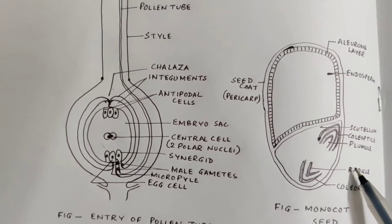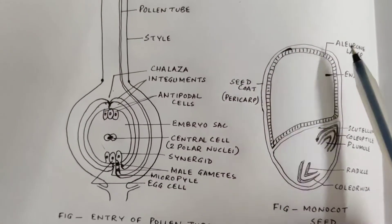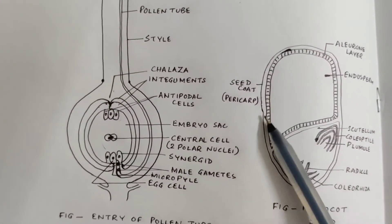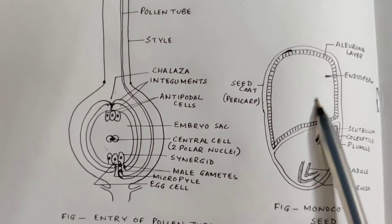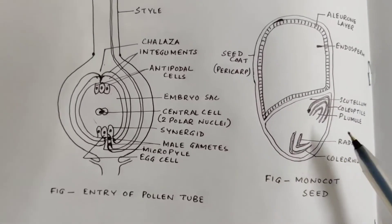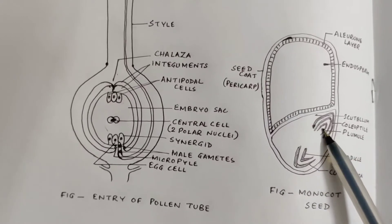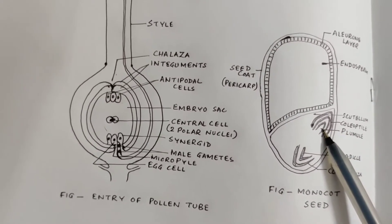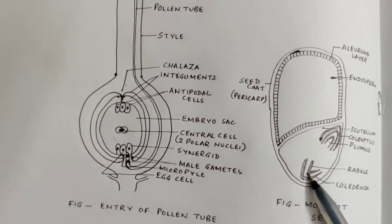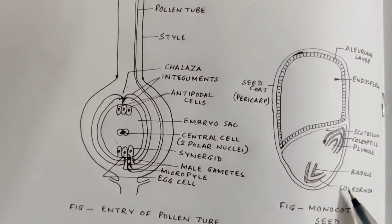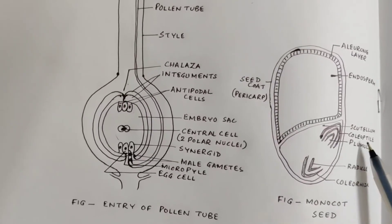Now coming to a monocot seed — this is the monocot seed of maize. The outermost layer is the pericarp, then comes a protein layer called the aleurone layer. The central part is filled with endosperm. Here is the radicle, which develops into the root, and this is the plumule, which develops into the shoot. Above the radicle we have a protective layer called coleorhiza.